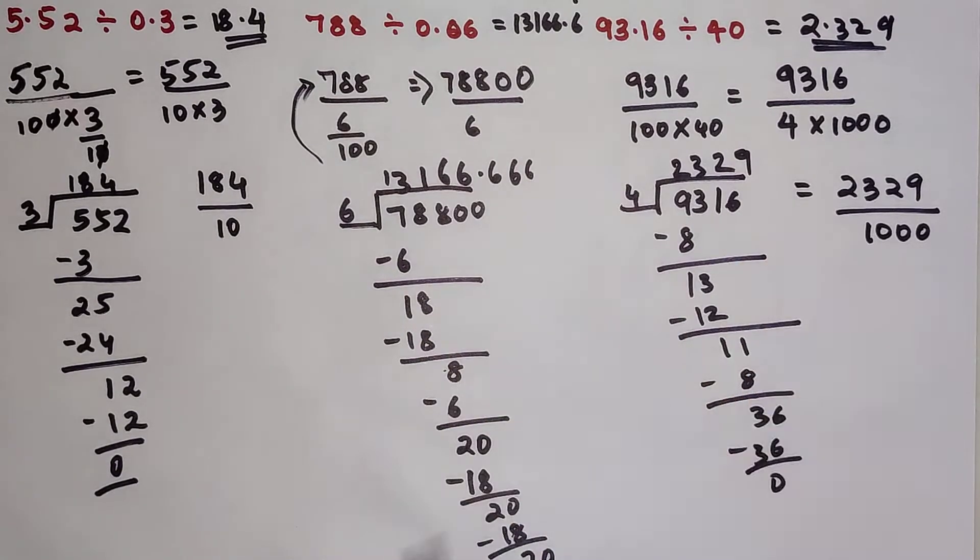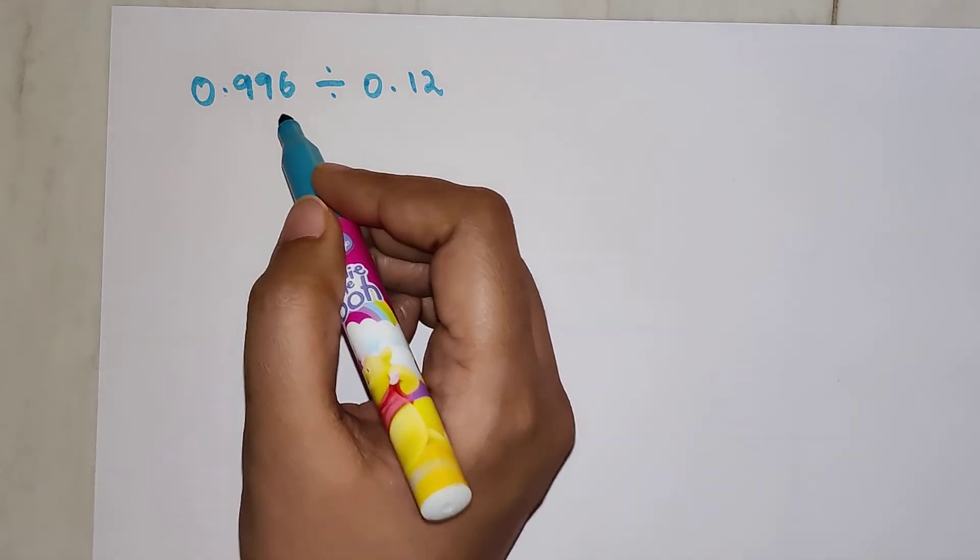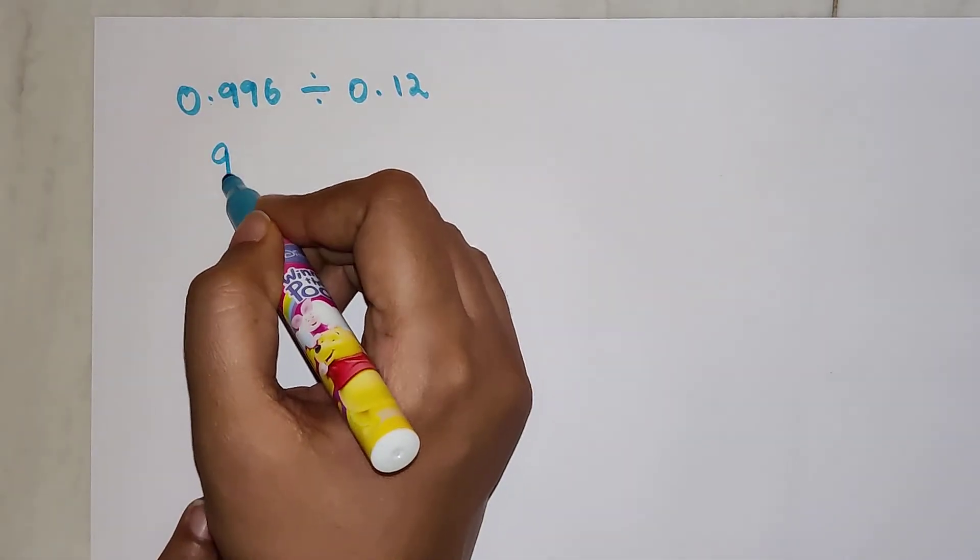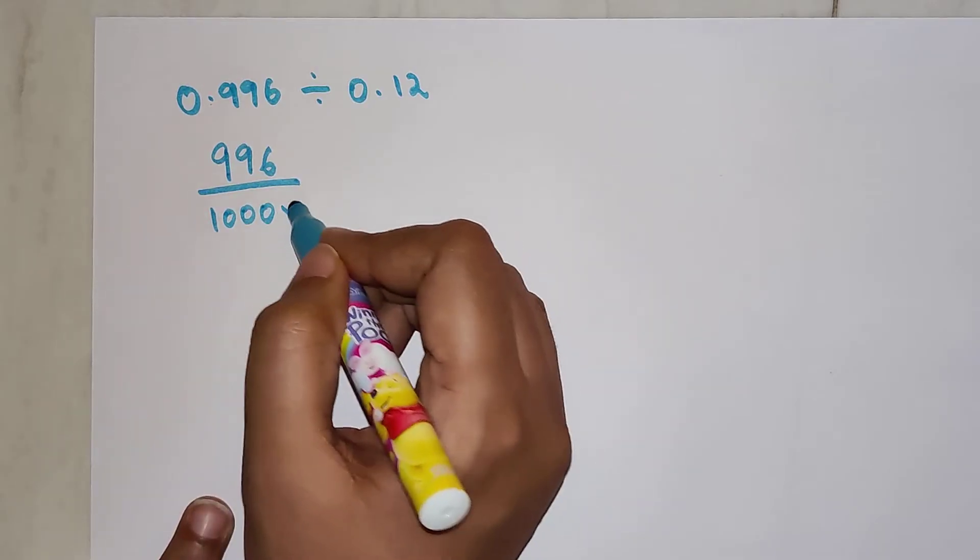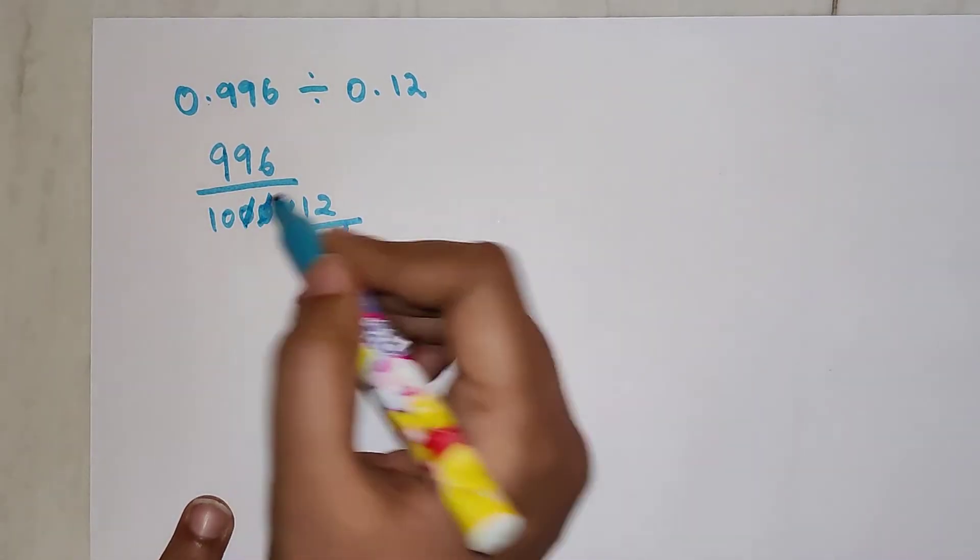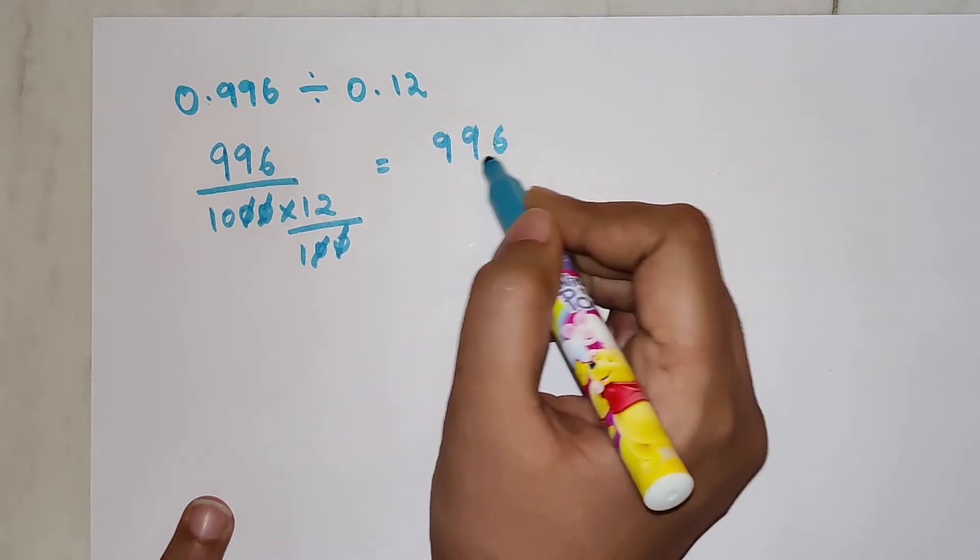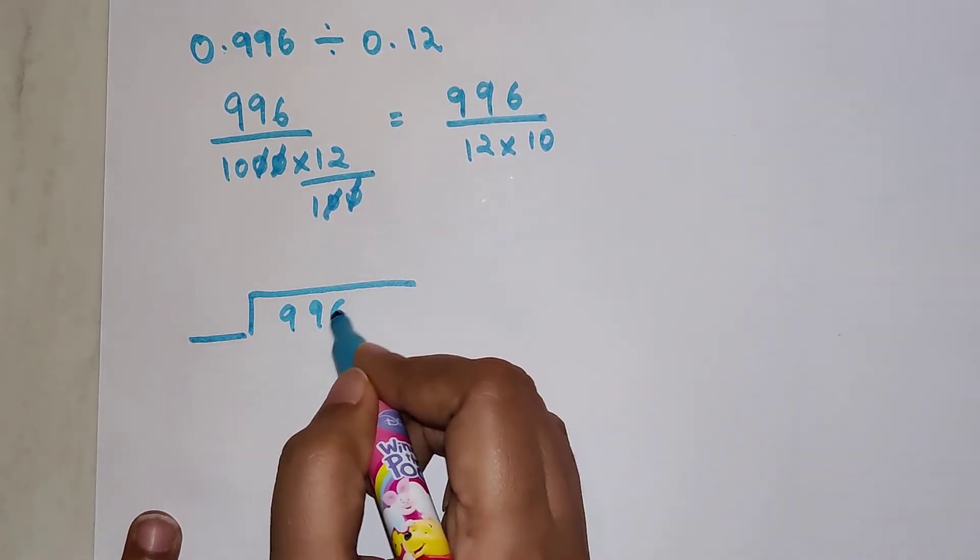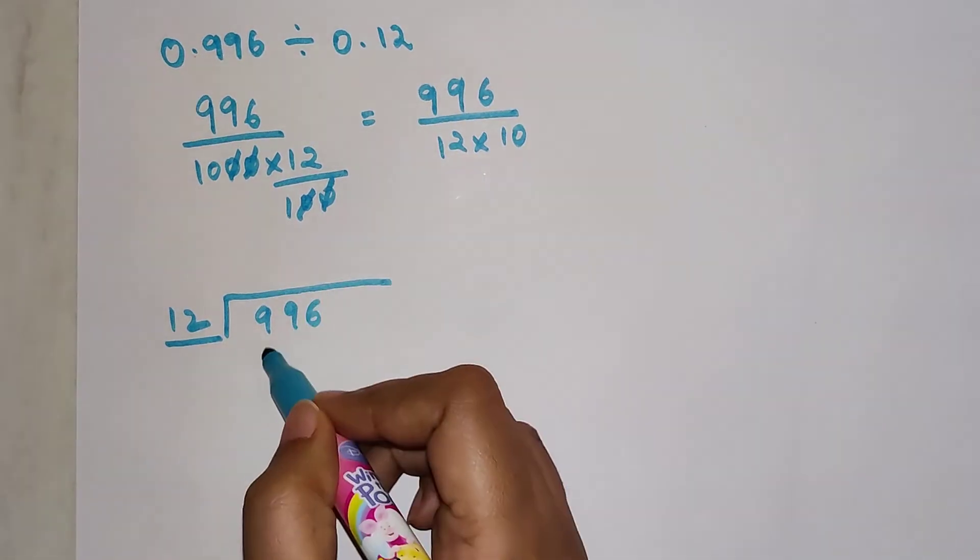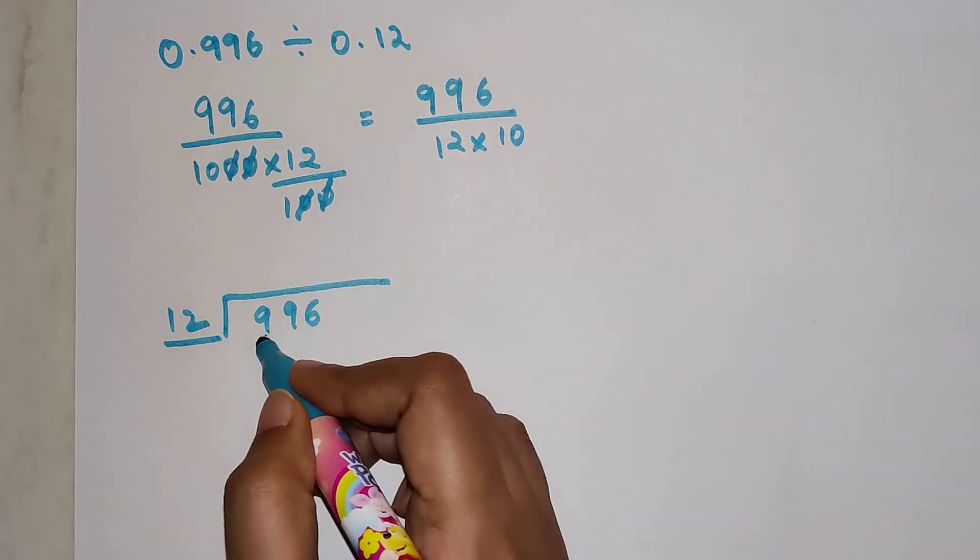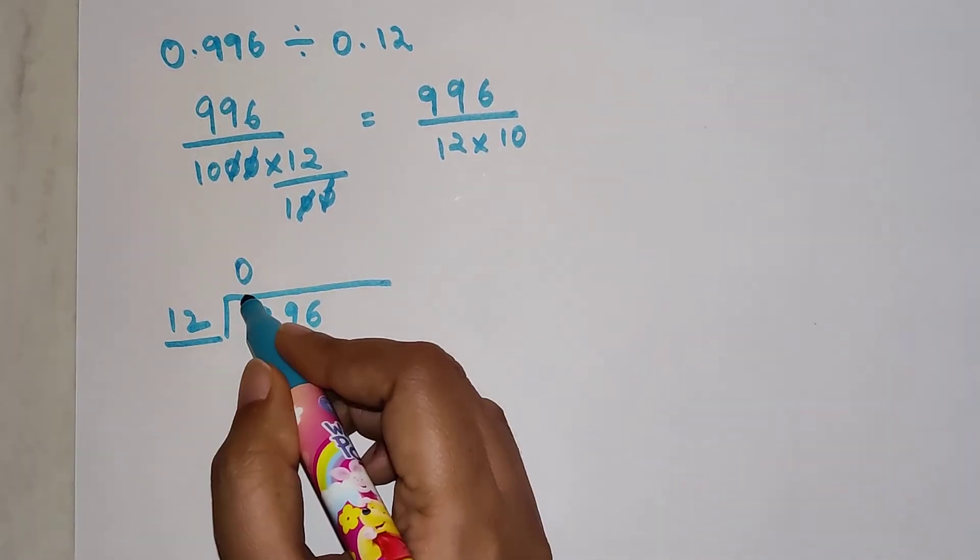So now let's do one more where the question has a zero starting with a zero point something. So here if the question was 0.996 divided by 0.12, we'll write this as 996 divided by 1000 multiplied by 12 divided by 100, because 0.12 will be written as 12 upon 100. So this is canceling, so your final answer is 996 divided by 12 into 10.